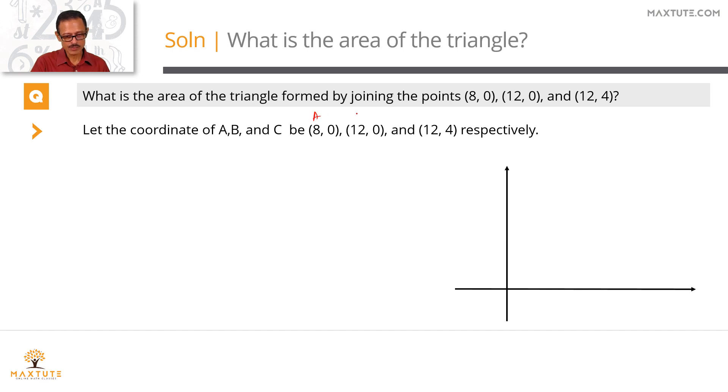Let's look at points A and B. The y coordinate of both A and B is 0. For what points will the y coordinate be 0? Points that lie on the x-axis have a y coordinate of 0. So both (8, 0) and (12, 0) are points lying on the x-axis.